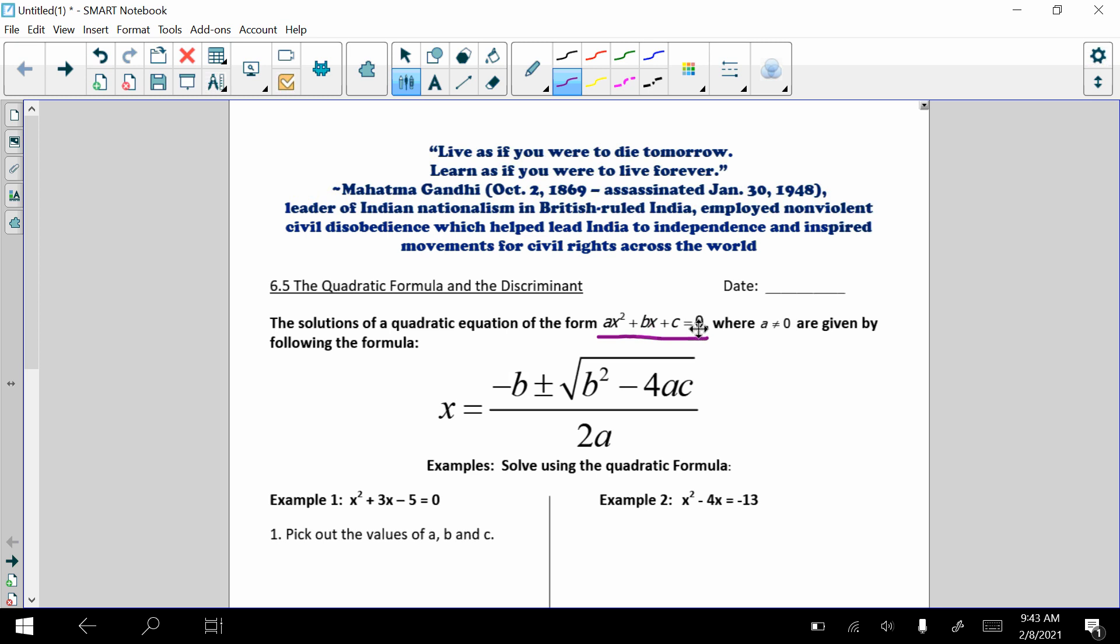Remember ax squared plus bx plus the constant and we set it equal to zero. Now before we even jump into this, I do want to say that we typically use the quadratic formula when the function is not factorable. It works for all quadratics, but we typically use it when the function is not factorable. Remember that the coefficient of the x squared is a, the coefficient of the x term is b, and our constant is c.